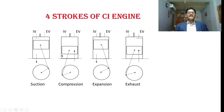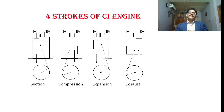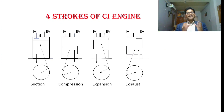The next stroke is the compression stroke. In the compression stroke the piston moves from BDC to TDC, and both the inlet as well as the exhaust valves are in the closed position. Just before the compression process is over, the fuel injector injects fuel into the engine cylinder. For that we employ a fuel feed pump, and the pressure at which the fuel is injected must be higher than the pressure present inside the engine cylinder, otherwise the fuel particles will not enter the cylinder.